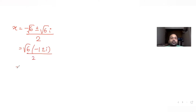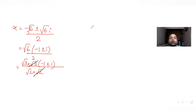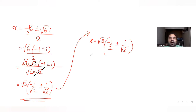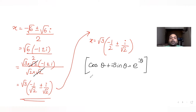We can write √6 as √2 · √3, so the expression simplifies. After cancellation, x = √3 · (−1/√2 ± i/√2). We now write this in the form cos θ + i·sin θ, since e^(iθ) = cos θ + i·sin θ, and e^(−iθ) = cos θ − i·sin θ.